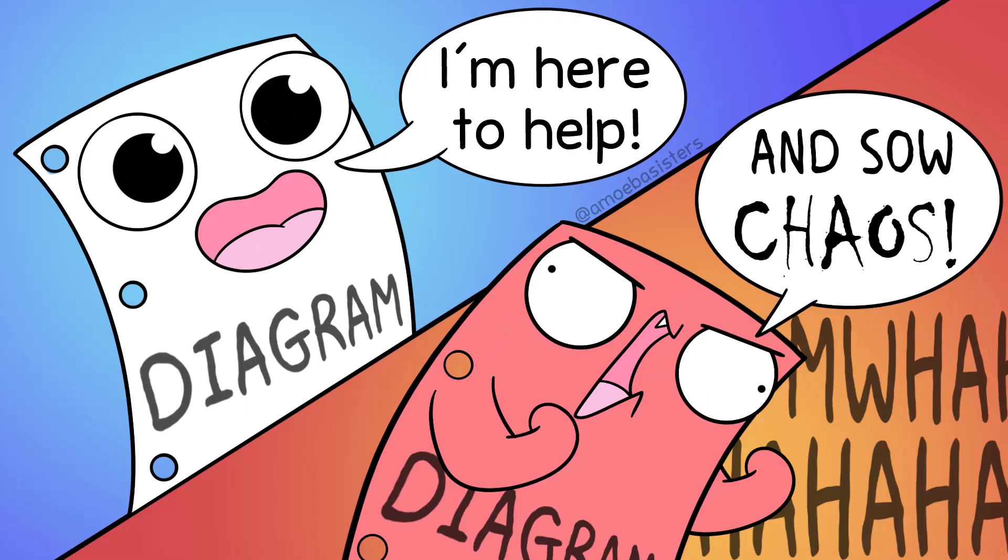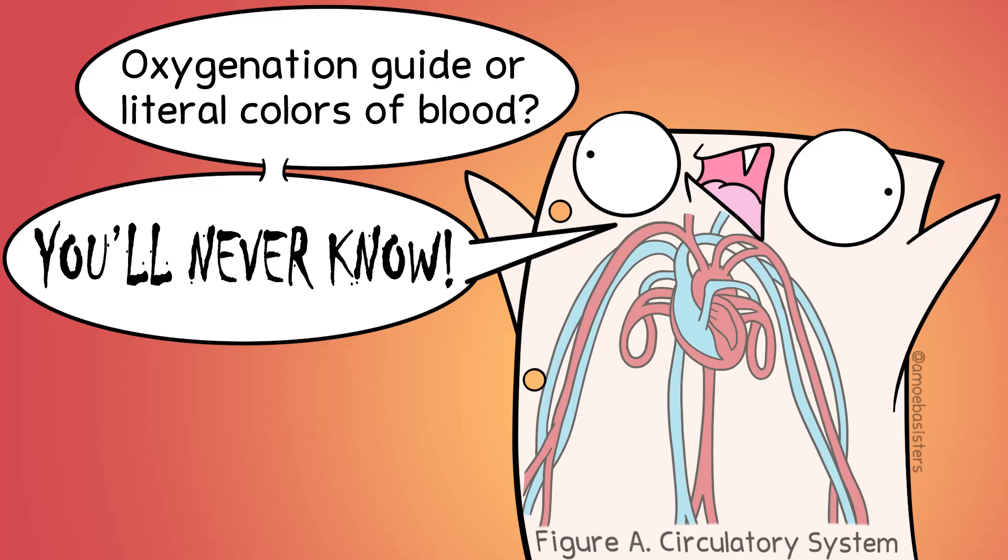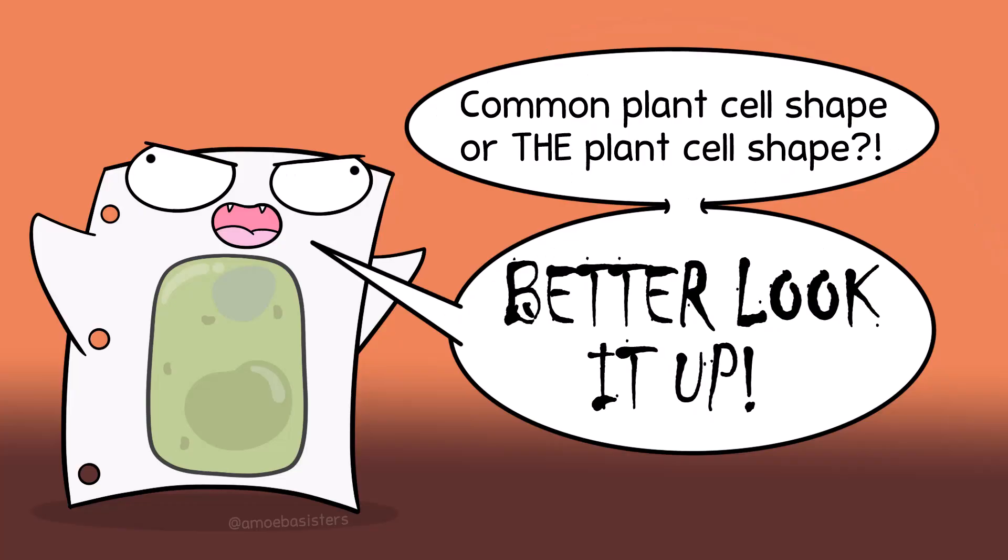One thing about biology: gotta be careful about diagrams. For example, view a circulatory diagram and you might think human blood can be blue or red, not realizing that human blood is red and the color coding shows oxygen concentration instead. Or see a diagram of a plant cell and suddenly you think all plant cells are boxy, and all of them are not.